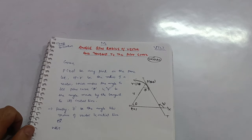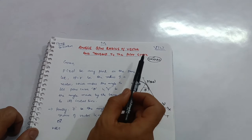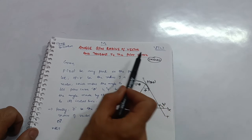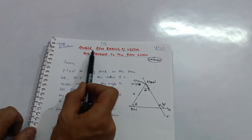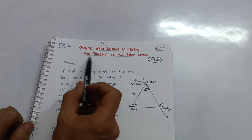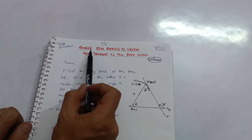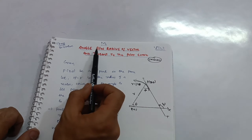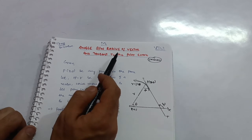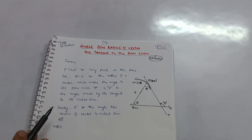Welcome back. Today I will solve this super important derivation for the VTU examination. This is a seven-mark derivation from the first module in Engineering Mathematics 1, covering the 2018, 2021, and 2022 schemes.